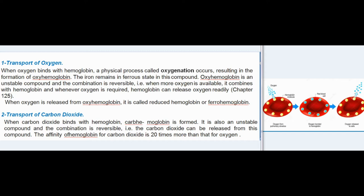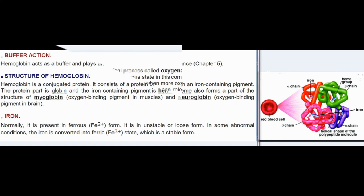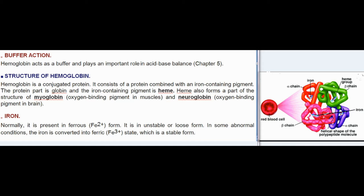When oxygen is released from oxyhemoglobin, it is called reduced hemoglobin or ferrohemoglobin. Transport of carbon dioxide: when carbon dioxide binds with hemoglobin, carbaaminohemoglobin is formed. It is also an unstable compound and the combination is reversible — the carbon dioxide can be released from this compound. The affinity of hemoglobin for carbon dioxide is 20 times more than that for oxygen.